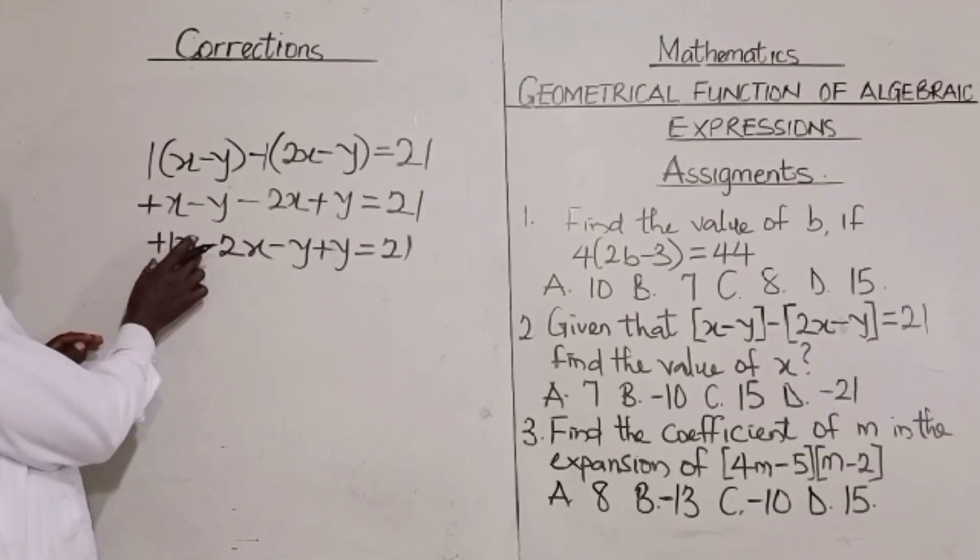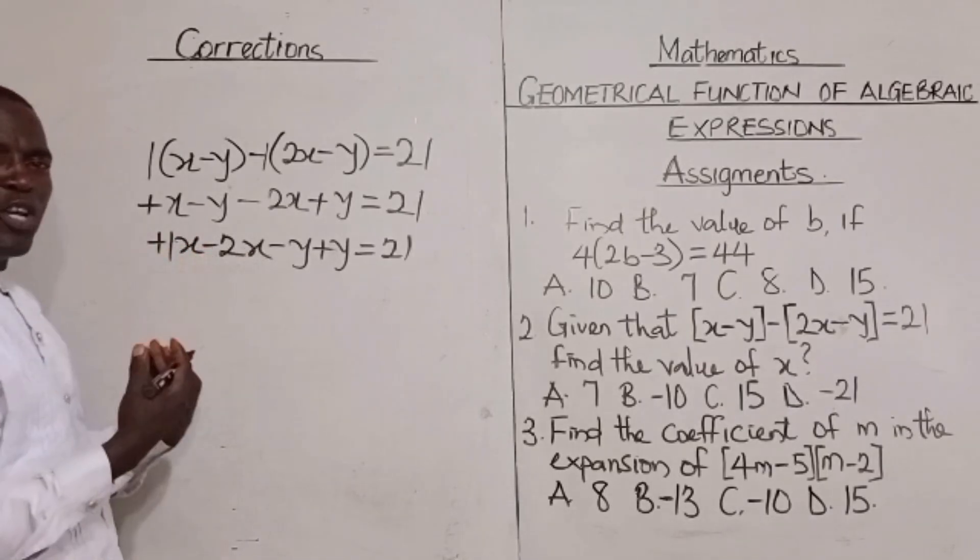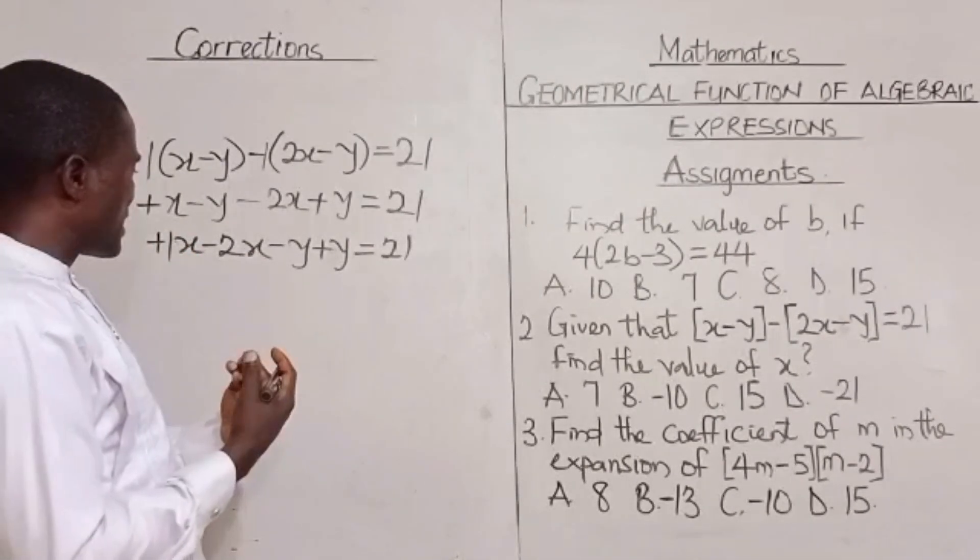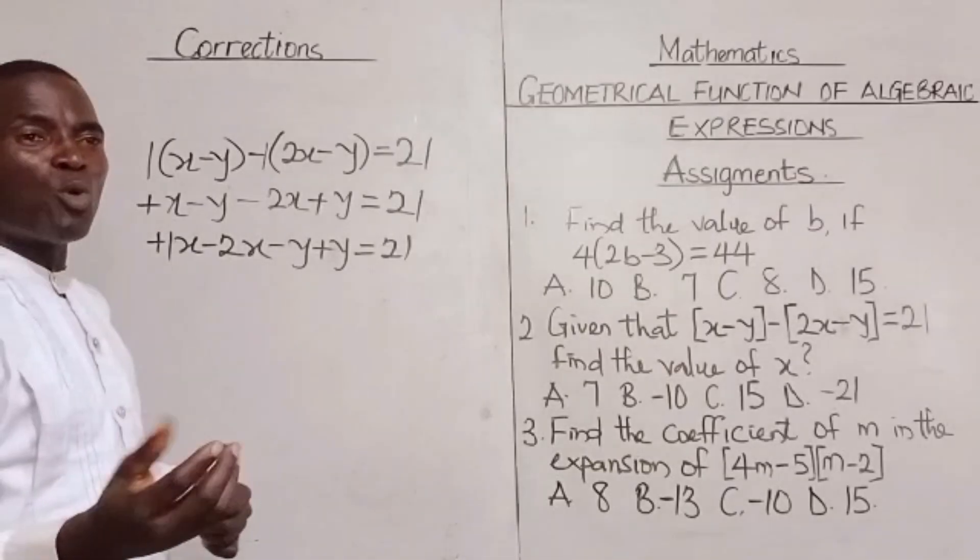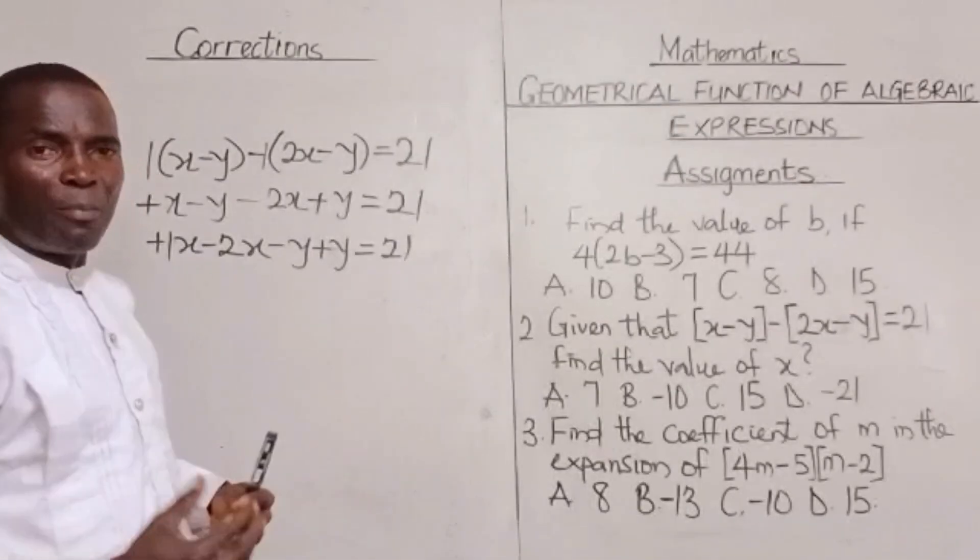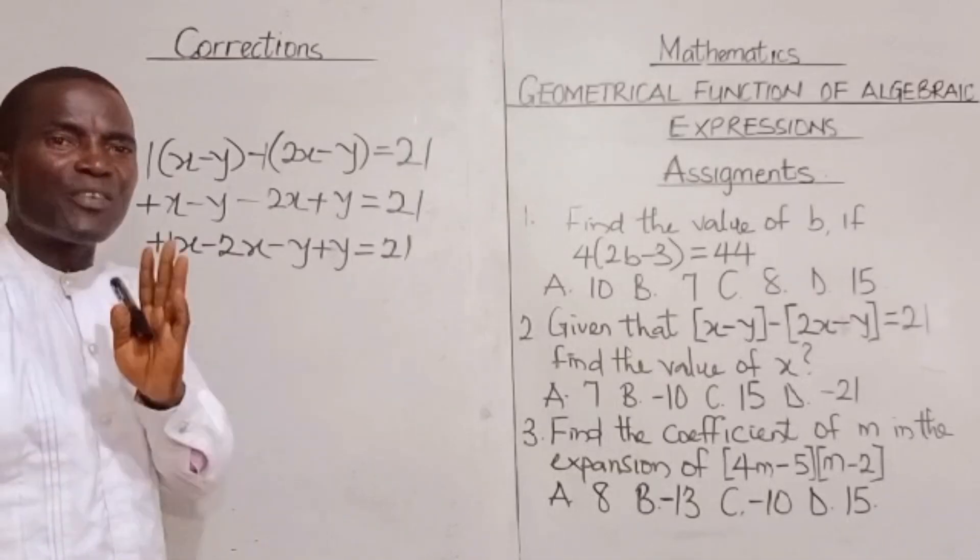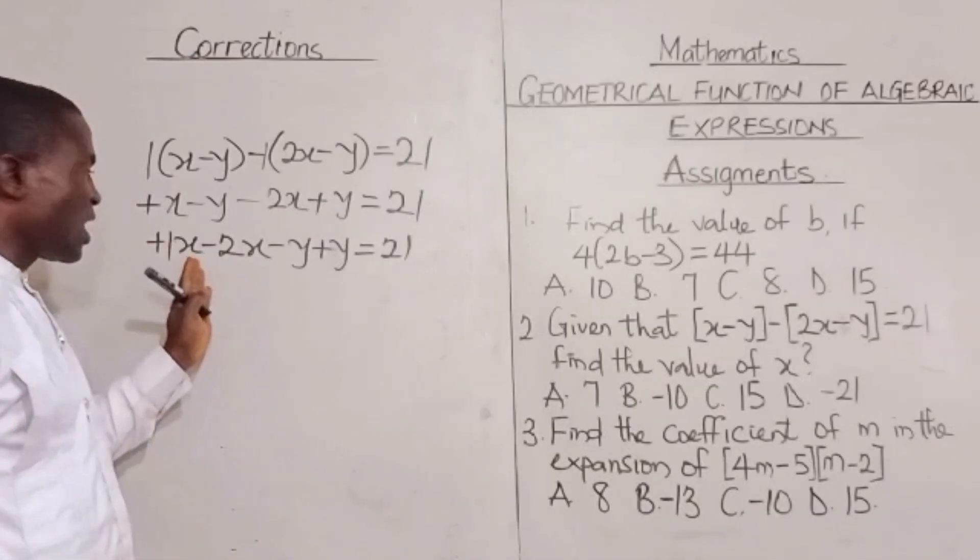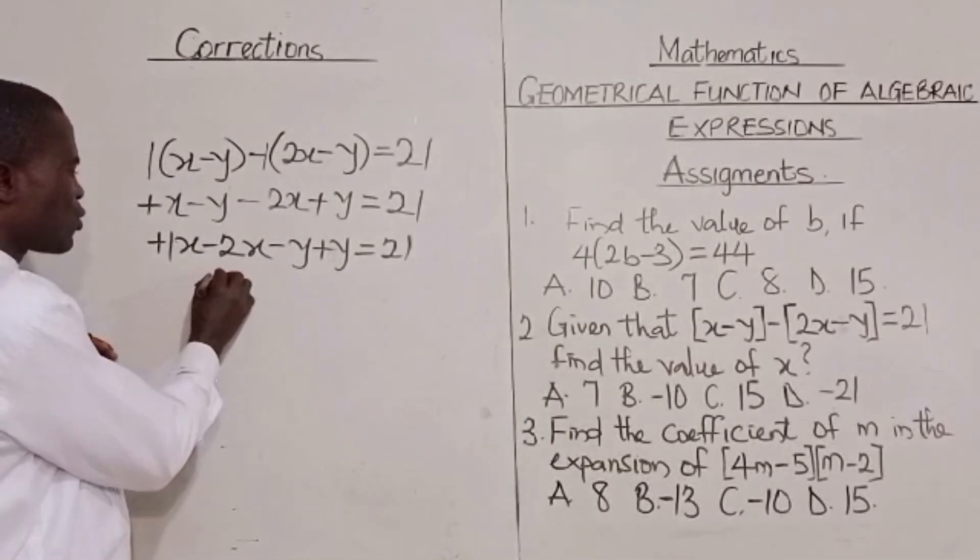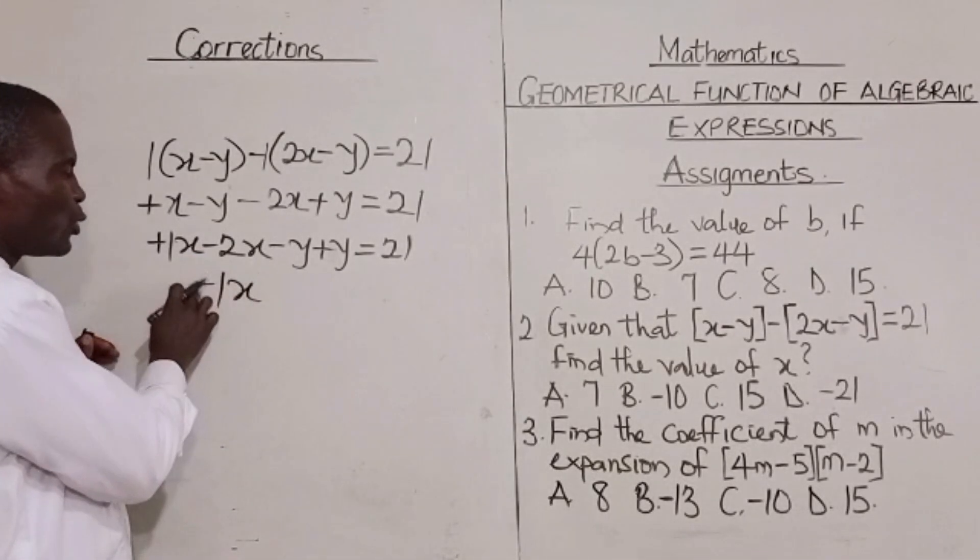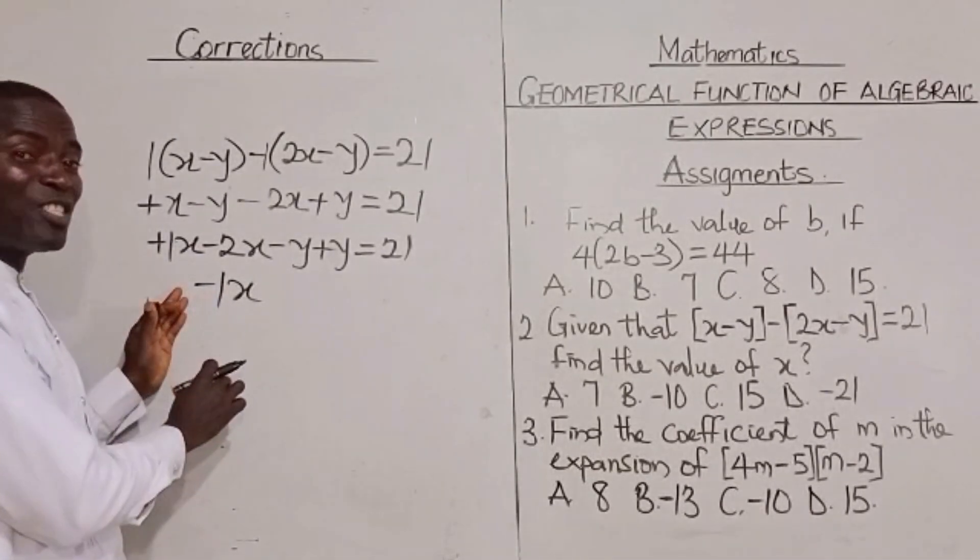Now, here is a plus 1. There is an invisible one here. Plus 1x minus 2x. That is to say, I have one with me, but minus 2x means I am owing 2x. So what I will just do, when the person that I am owing, when it comes, I say, where is my money? Then I would make an appeal. Please, I have one in my pocket. I am going to pay this one. Then my balance is going to now be minus 1x. I have to put minus to indicate that that is the amount of money that I am yet to pay.